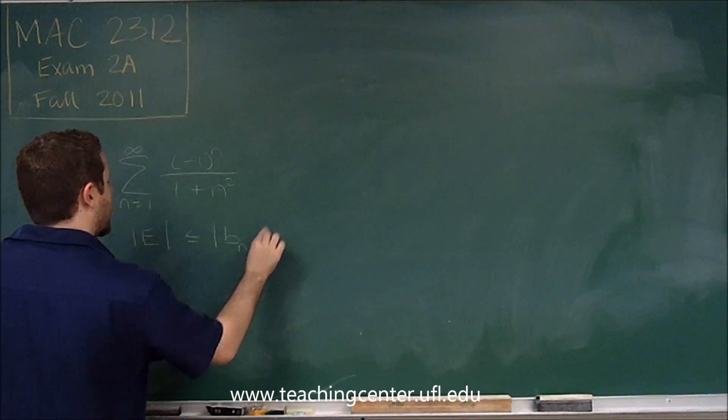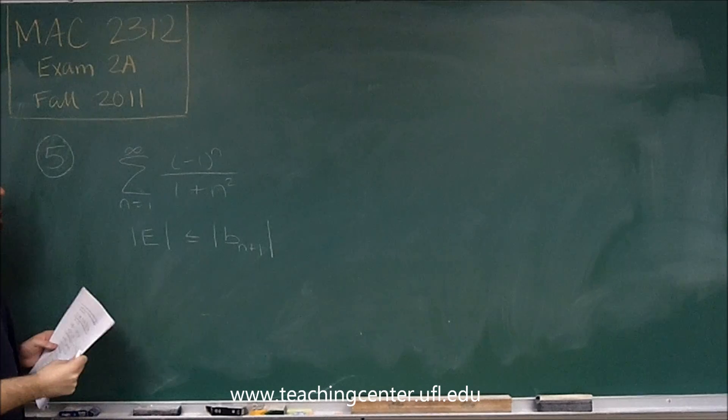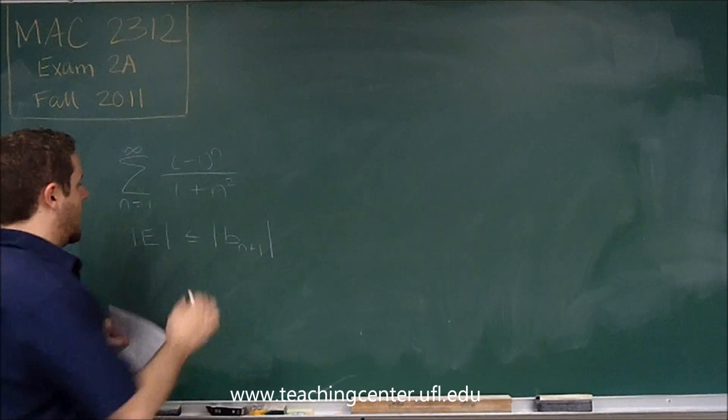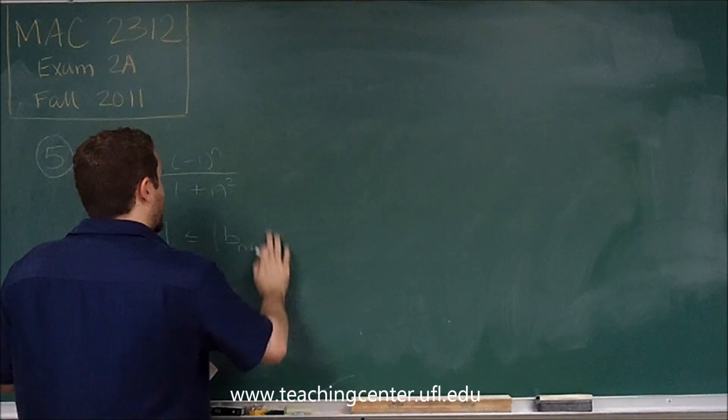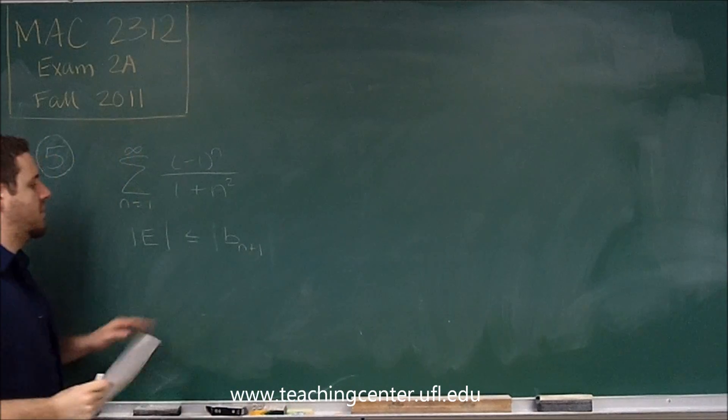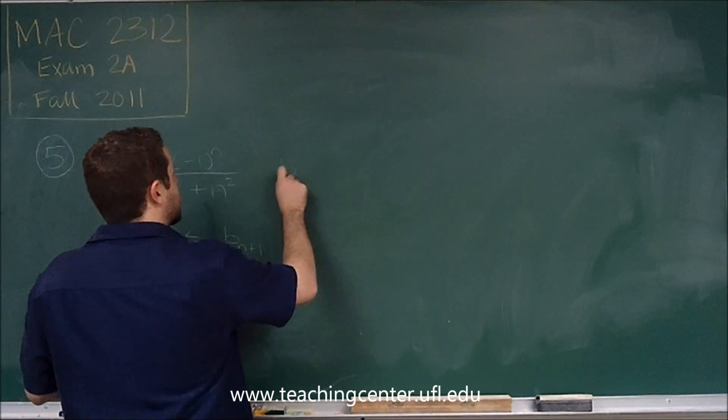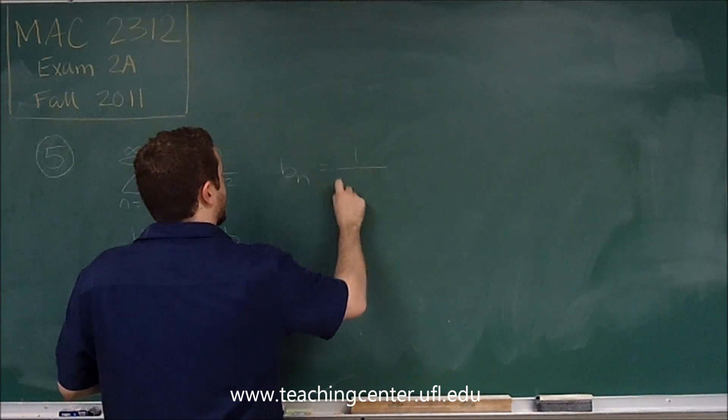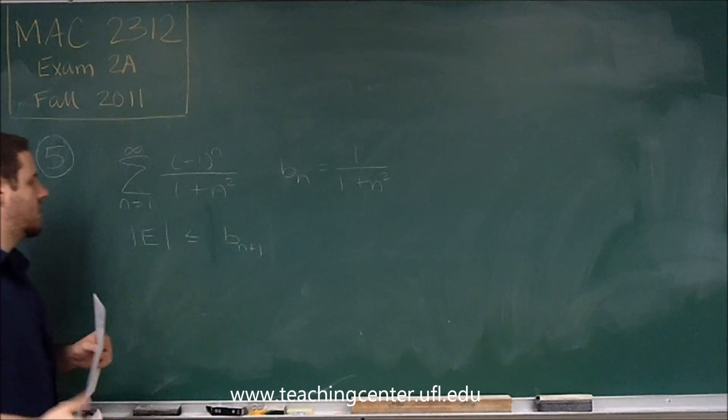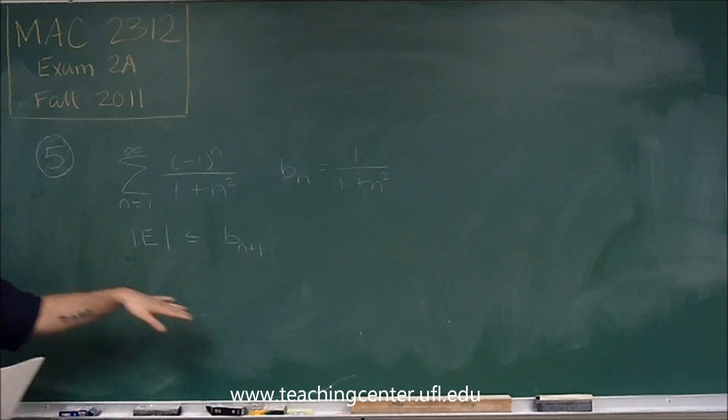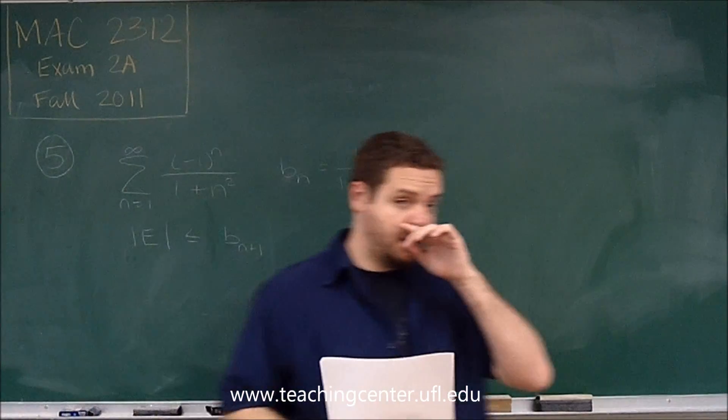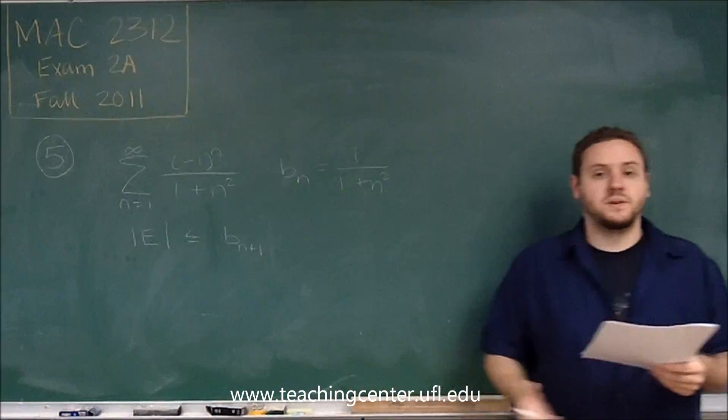The absolute value of our error is always going to be less than or equal to b_{n+1}, where - actually I don't need absolute value there, because b is the part of this series that doesn't include the alternating part. So b_n is 1 over 1 plus n squared. Our error is always less than or equal to the next term in the series.